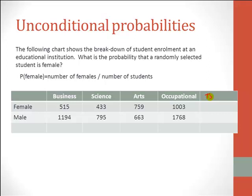Let us compute the totals. If you add the female numbers across, you will see that the total number of females in our population is 2710. We also need the total number of students, but to get that we will have to figure out the total number of males. Adding those numbers across gives us the total number of males as 4420, which then gives us the total number of students at this institution as 7730.